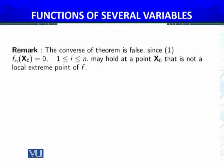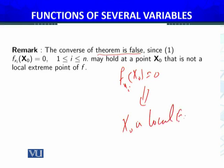We now have a remark: the converse of the theorem is false. The converse would state that if all partial derivatives of f at a particular point x₀ are zero, then x₀ is a local extreme point. This is not true.